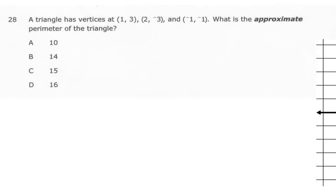Alright, number 28. A triangle has vertices of (1, 3), (2, -3), and (-1, -1). What is the approximate perimeter of the triangle?